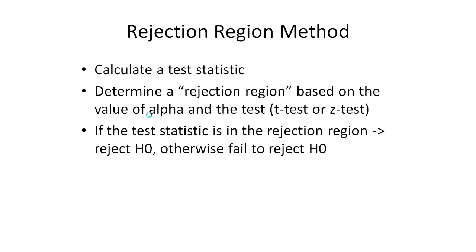The easiest way to think about this is if the test statistic is in the rejection region, we reject H naught, otherwise we'll fail to reject H naught. We'll look at these two methods separately, but they're equivalent, they're just two different ways of looking at the same problem. They're both common enough that we should know how to do both of them.